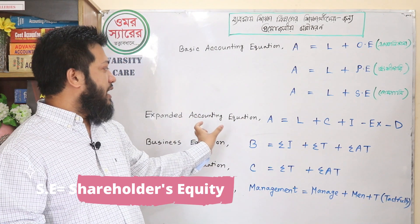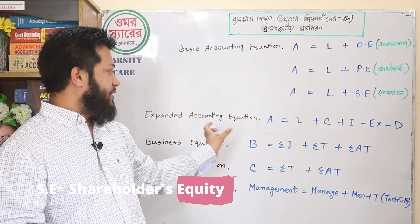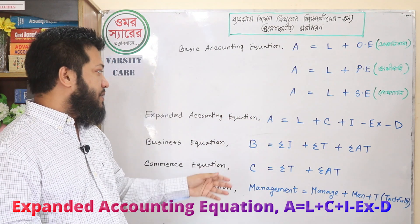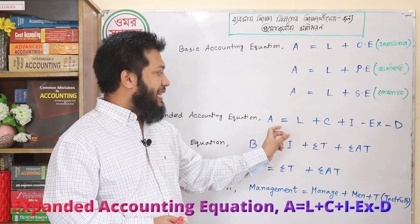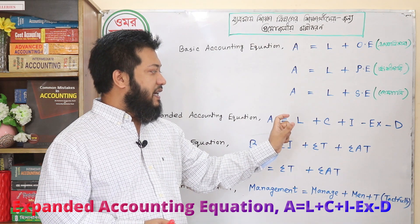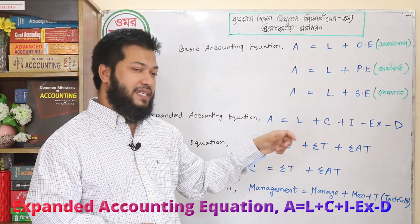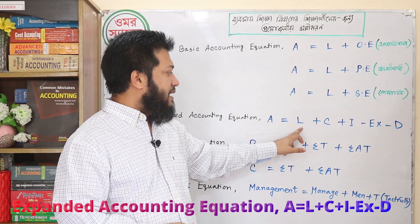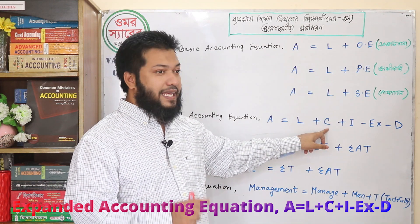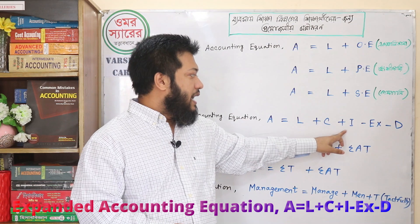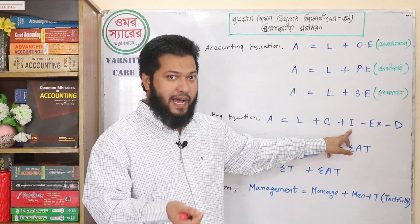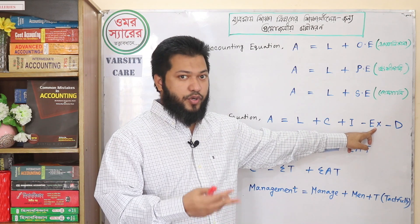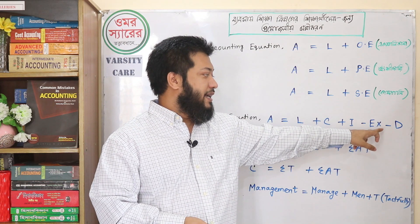Now let's see the expanded accounting equation. We call it A equal to L plus C plus I minus EX minus D. A means assets, L means liability, C means capital, I means income, EX means expense, and D means drawings.